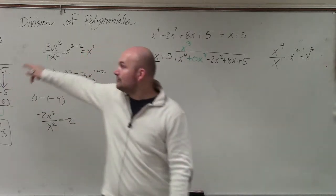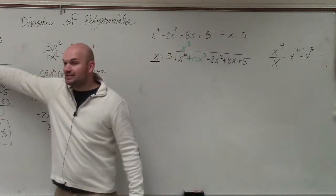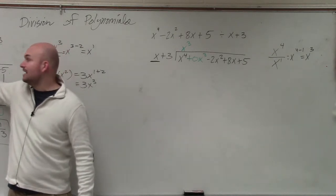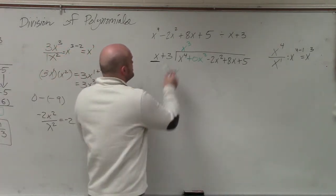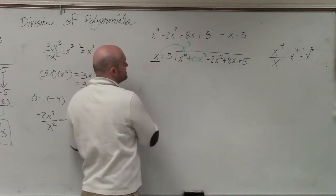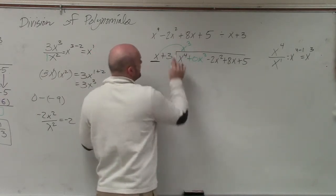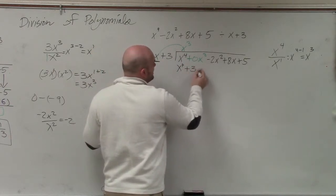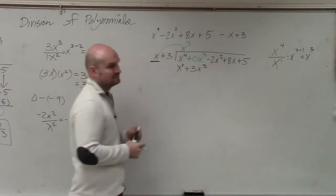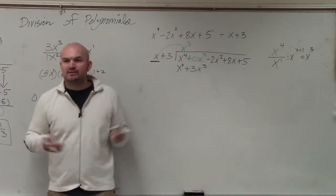Now, just like I did over there, whatever your answer is, you have to multiply by both of the terms. So I do x cubed times x, which is x to the fourth. x cubed times 3 is going to be a 3x cubed. Is everybody OK with that stuff?